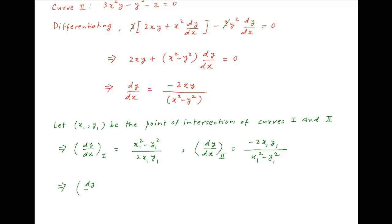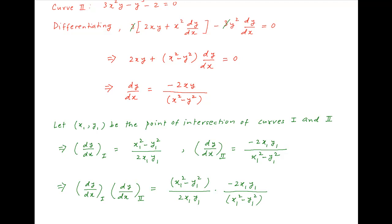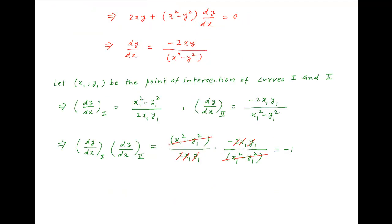Now if we take the product of the two gradients of the tangents for the first curve and the second curve at the point of intersection, we get (x1 squared minus y1 squared) divided by 2x1y1, multiplied by minus 2x1y1 divided by (x1 squared minus y1 squared). The (x1 squared minus y1 squared) cancels and the x1y1 cancels across numerator and denominator, and we are left with minus 1 for all x1, y1. Since two lines are perpendicular if the product of their gradients is minus 1, the two curves intersect orthogonally, or at 90 degrees, at all points of intersection.